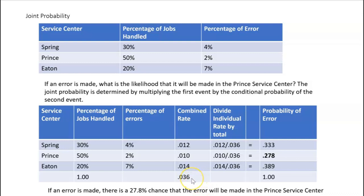0.036 is the total rate. Now we divide each combined rate by the total rate. For the Spring center: 0.012 ÷ 0.036 = 0.333 — the probability of an error taking place in the Spring service center is 0.333. But the problem didn't ask about Spring. For Prince: the combined rate is 0.010 divided by 0.036, giving a probability of 0.278.